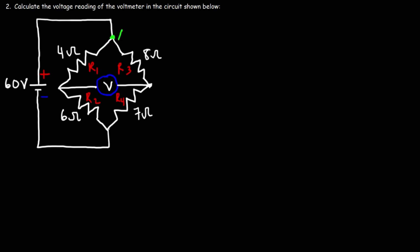So let's call this point A, point B, point C, and point D. In order to calculate the voltage reading of the voltmeter, that's going to be the difference between the potential at C and at D. So if we could find those values, we can get the answer. Now, it's important to understand that a voltmeter has a very high resistance. The resistance is so high that the current flowing through the voltmeter is negligible. We could assume that it's almost zero.